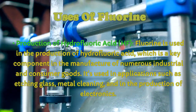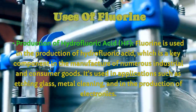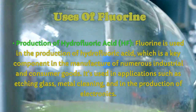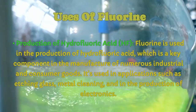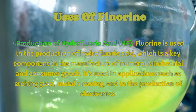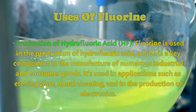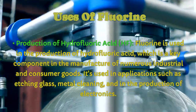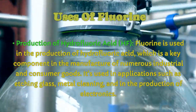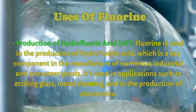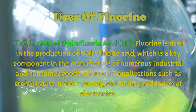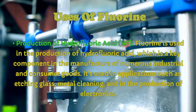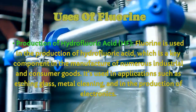Uses of Fluorine. Production of Hydrofluoric Acid (HF): fluorine is used in the production of hydrofluoric acid, which is a key component in the manufacture of numerous industrial and consumer goods. It's used in applications such as etching glass, metal cleaning, and in the production of electronics.